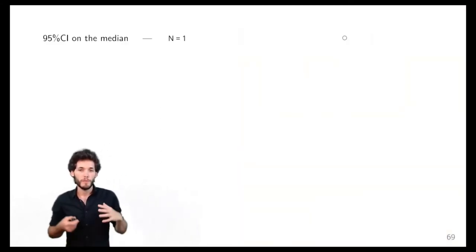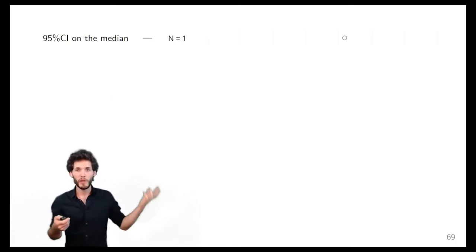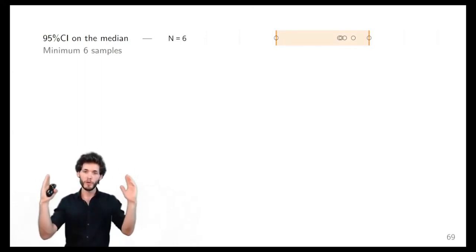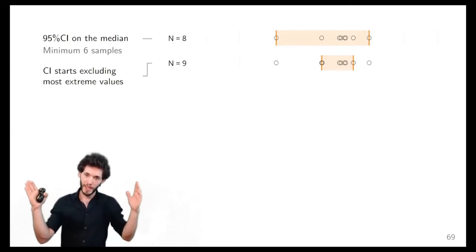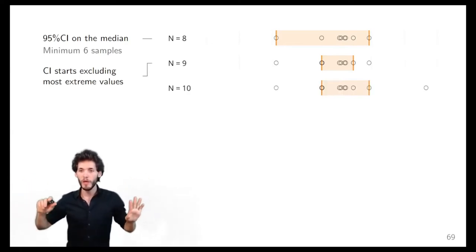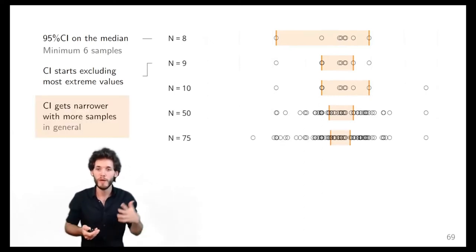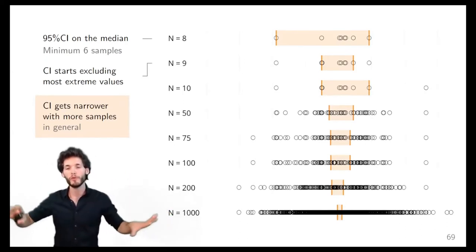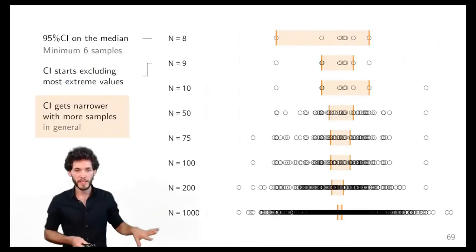Visually, here's how this looks: when you collect one sample it's not enough, two, three, four, five — at six samples you finally have enough to compute a confidence interval. As you collect more and more samples, you gradually exclude more extreme values. It doesn't necessarily mean the confidence interval always gets narrower with each added sample, but you will tend to get a progressively narrower numerical confidence interval as you collect more and more data.